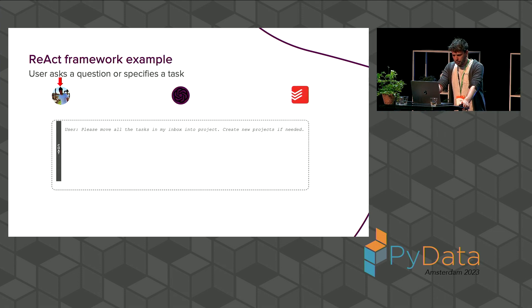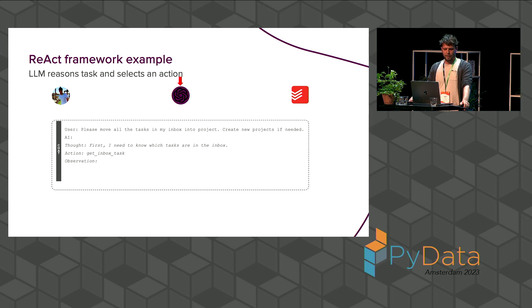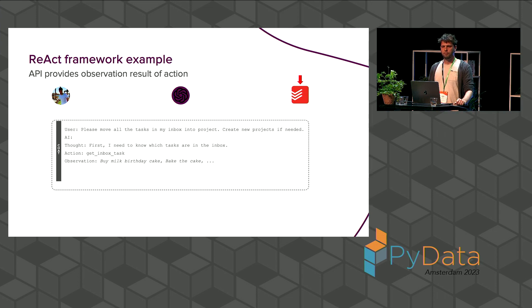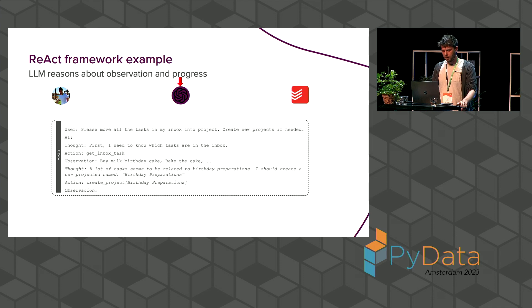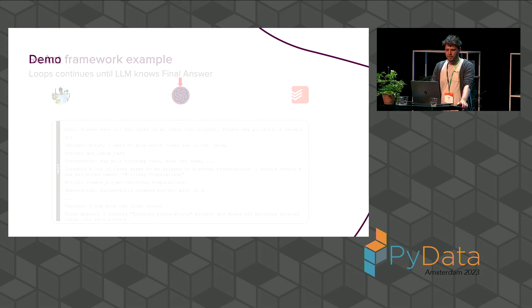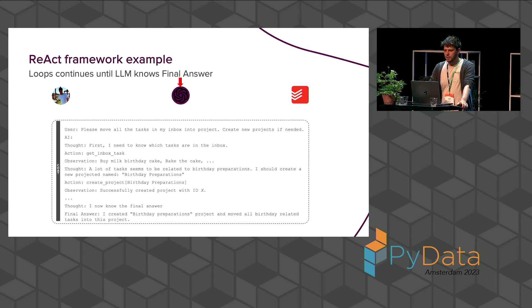So how does this look for the previous example? We would get something like: please move all my tasks in my inbox into a project, create a project if needed. Now the AI thinks, first I need to know which tasks are in my inbox, so it says perform this specific task. Here the LLM generation stops. Then it moves to Todoist, gets a list back — some Python code formats the response — and gives the observation back. Then it can reason again about the previous observation and what it has done so far, decides it needs to create a project, and keeps going until it knows the final answer.